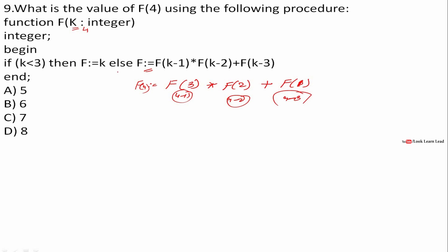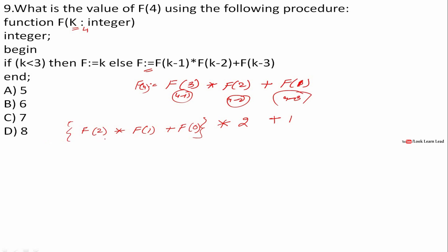f(1) = 1, f(2) = 2. For f(3): f(2) * f(1) + f(0) = 2 * 1 + 0 = 2 + 0 = 2. Wait — f(3) = f(2) into f(1) plus f(0) = 2 * 1 + 0 = 2, but reconsidering: 2 cross 2 plus 1 = 4 + 1 = 5. So f(3) = 5. Therefore f(4) = f(3) * f(2) + f(1) = 5. The answer is A: 5.